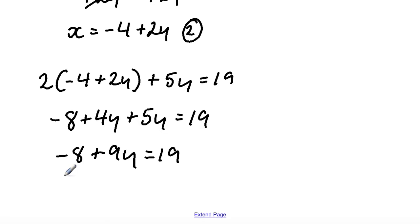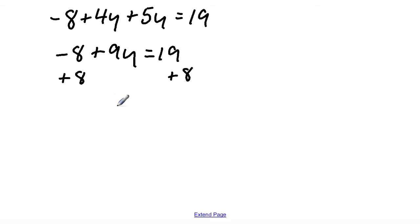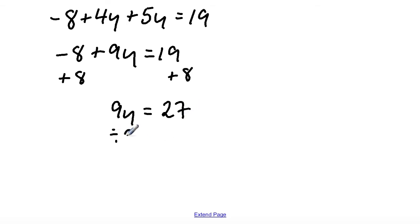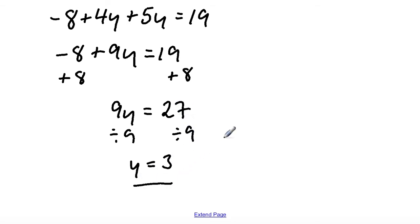I'm then going to add 8 to both sides. So what we have is 9y is equal to 27. I'm then going to divide both sides by 9. So y is equal to 27 divided by 9, which is equal to 3. And that's our answer for the value of y.